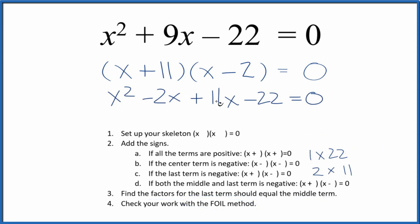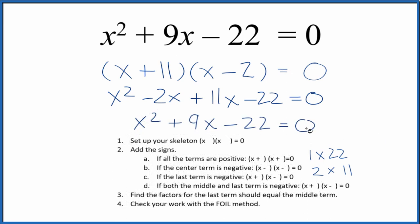And we can combine negative two X and 11 X that gives us the nine X. And this is the same thing we started with. So we've correctly factored X squared plus nine X minus 22.